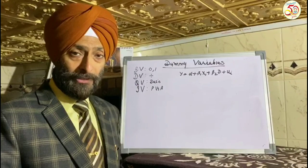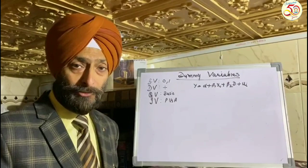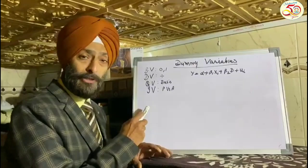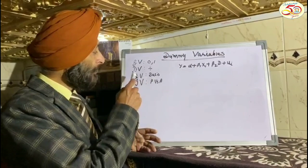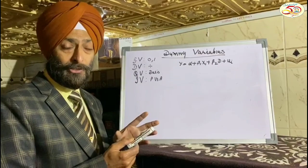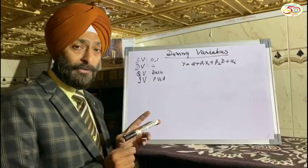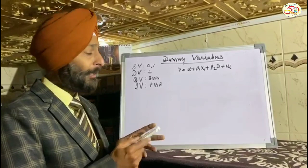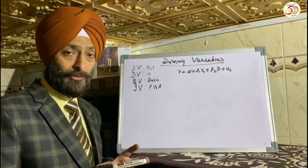The topic is dummy variables. We know dummy variable is also called by different other names: binary variable, dichotomous variable, qualitative variable, and indicator variable. It is called binary variable because we allot two values to it, either 0 or 1. Because 0 indicates absence of the attribute and 1 indicates presence of the attribute, that is why it is also called indicator variable.